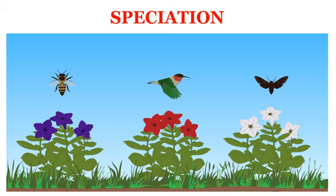New species can be said to have come into existence only if a group of beetles splits into populations that cannot reproduce with each other. When this happens, they can be called two independent species. So we can extend the reasoning we have used above to explain such speciation.